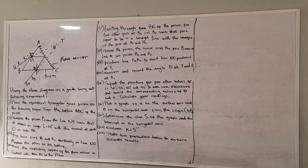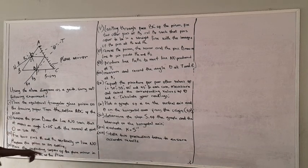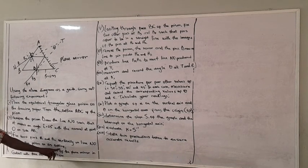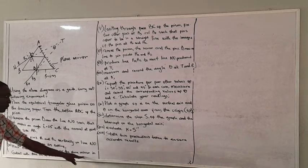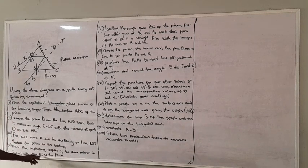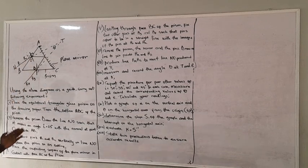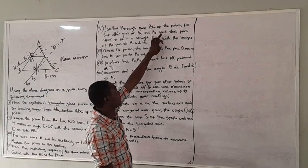All you have to do is take measurements with your measuring instrument. Place two pins R1 and R2 vertically on line NO. Replace the prism on its outline. Step 4: Place the reflected surface of the plane mirror in contact with face AC of the prism — so you put your plane mirror there. Then, looking through face BC of the prism, face two other pins at R3 and R4.